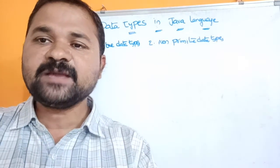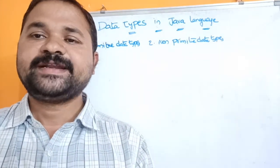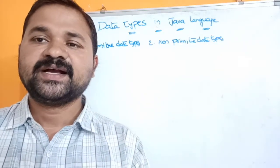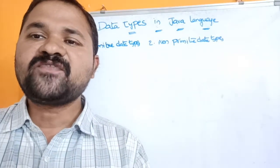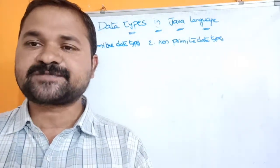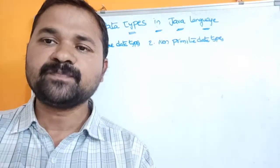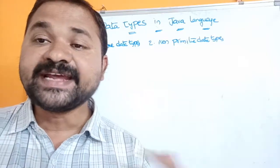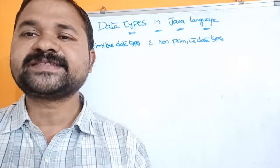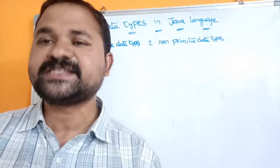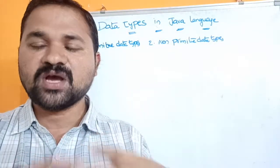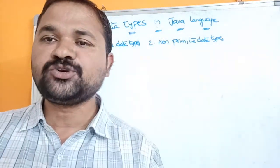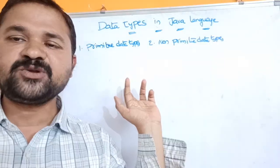Now let's see about data types in Java. Data types are mainly useful in order to declare variables which can store values. Java is a strongly typed language — that means in Java, variable declarations are compulsory. Whereas Python is a loosely typed language, meaning variable declarations are not necessary. So before using a variable, we have to declare it in Java.